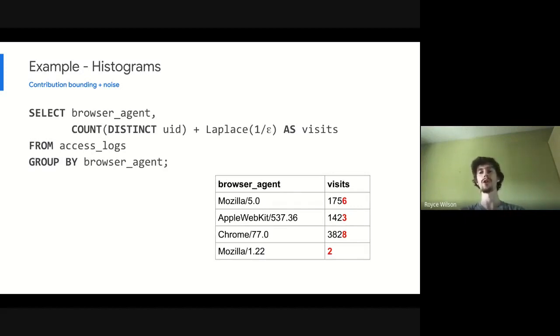But the overall query output is still not there. In particular, you'll notice that last row, this very old Mozilla browser agent, there is only one user using this browser agent. So if we subtract their contribution from the table, we'll see that output row drops off entirely, and it doesn't matter how much noise you add, that row is always going to drop off, and we're going to need to do more things to satisfy our differential privacy definition.